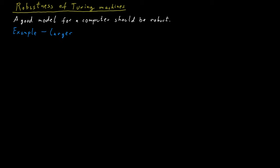The first such example is one where we allow the Turing machine to have a different tape alphabet. The basic tape alphabet is 0, 1, blank. But we could have larger tape alphabets as well, and we want to argue that having a larger tape alphabet does not fundamentally change what you can compute.